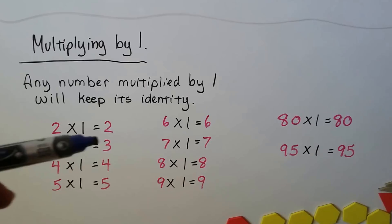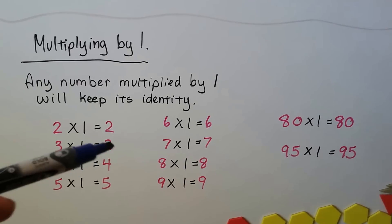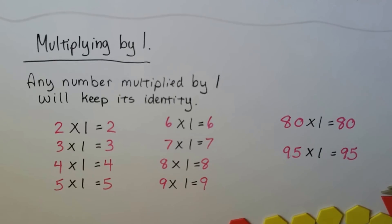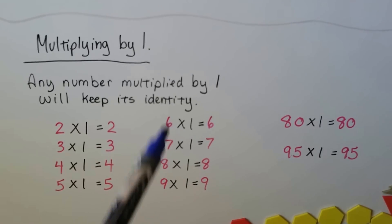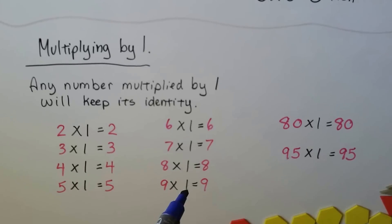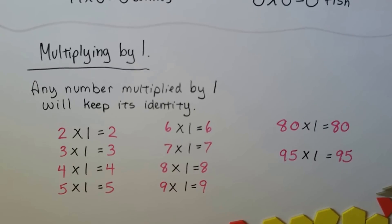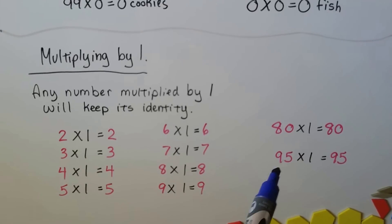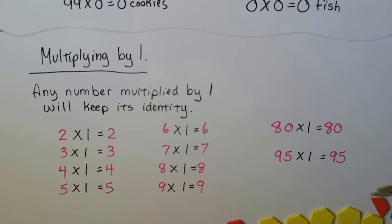We multiply 3 times 1, and that's going to be 3. He's going to stay the same. 4 times 1, the 4 stays the same. 5 times 1, the 5 stays the same. And it doesn't matter what number we multiply times 1, it's going to keep its identity. We could even do 80 times 1, and that's going to stay 80. We could do 95 times 1, and that's going to stay 95.